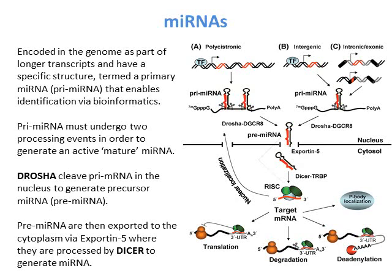MicroRNAs are encoded in the genome as part of longer transcripts and have a specific structure termed a primary microRNA. This structure is important because it has historically allowed scientists to identify microRNAs using bioinformatic information. MicroRNAs can be derived from many different locations — between genes (intergenic), within exons or introns of coding genes, or within polycistronic genes. Wherever they're found, prior to processing these microRNA molecules appear with this classical primary microRNA stem loop structure.